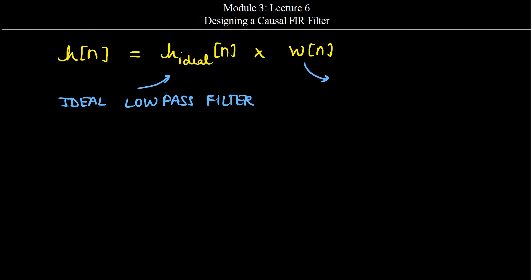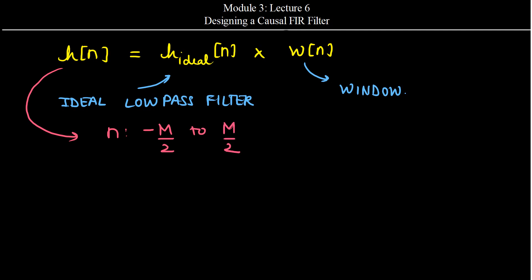W of n is the window function, and we have also seen some of its specifications. Now after doing truncation, or after obtaining this H of n, if we look at the domain of H of n, the range of n goes all the way from minus M by 2 to M by 2, which means that this H of n is still a non-causal filter.